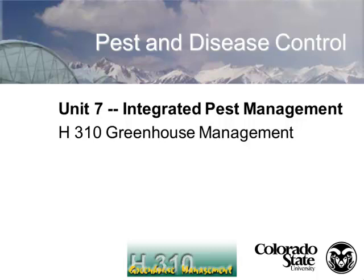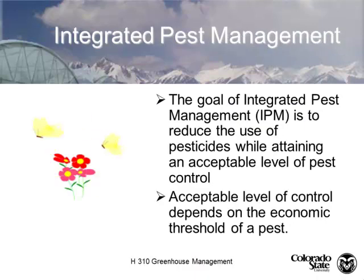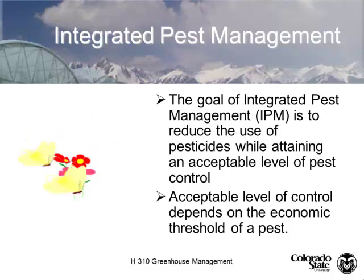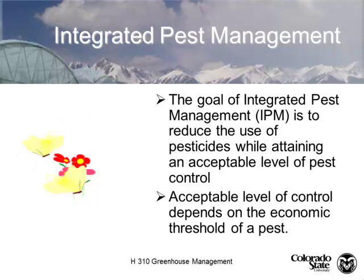Integrated Pest Management of the Greenhouse. The idea is to reduce the use of pesticides while still maintaining an acceptable level of insect control. This part right here — acceptable control — really depends on a concept that we call economic threshold.